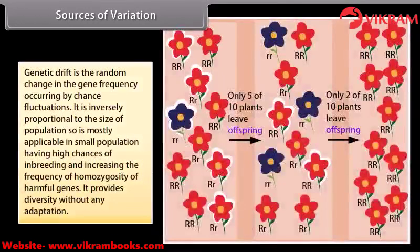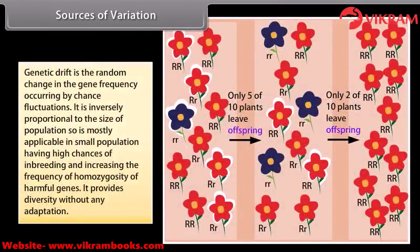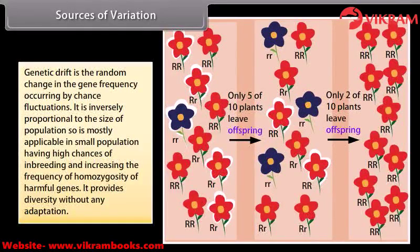Genetic drift is the random change in gene frequency occurring by chance fluctuations. It is inversely proportional to the size of the population, so it is mostly applicable in small populations, which have high chances of inbreeding and increasing the frequency of homozygosity of harmful genes. It provides diversity without any adaptation.